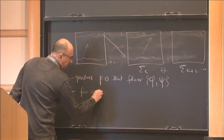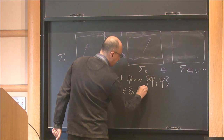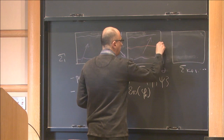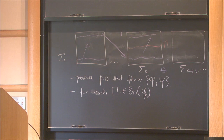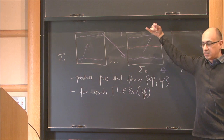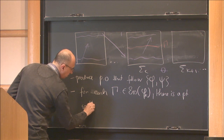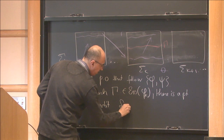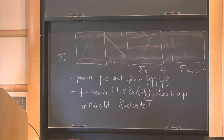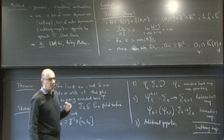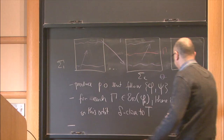You want additional properties from these pseudo-orbits: for each γ which is an essential circle in one of these annuli — homotopically non-trivial, like a Lipschitz graph provided by Birkhoff theory — there is a point on this orbit that is δ-close to γ.